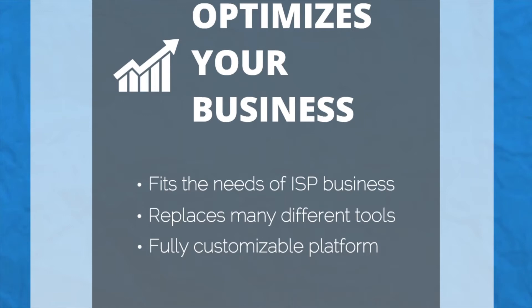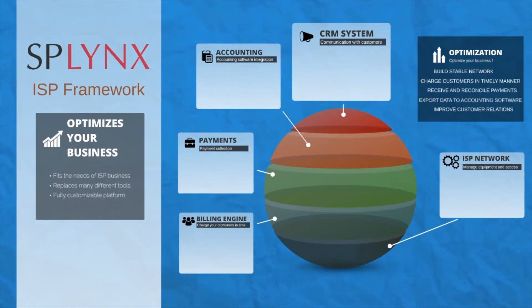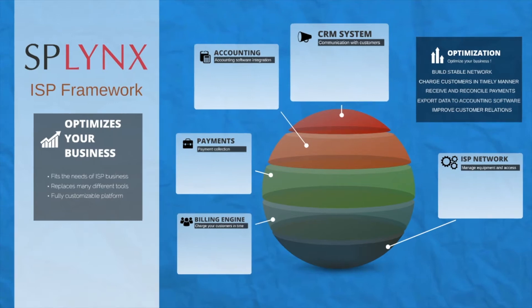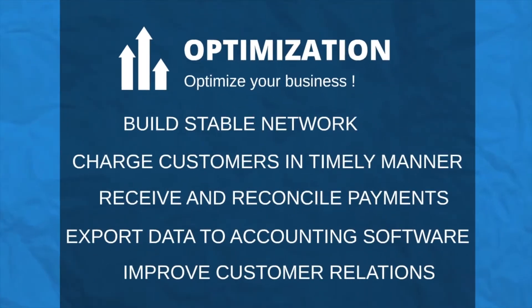We operate in five main areas. We help to build a stable network, then we help to charge customers, export everything to accounting, and we have a strong CRM system.